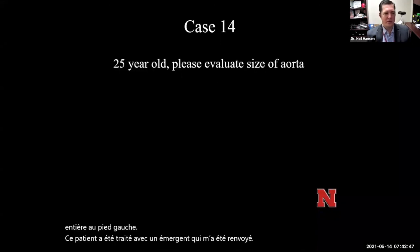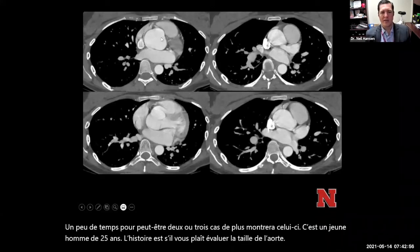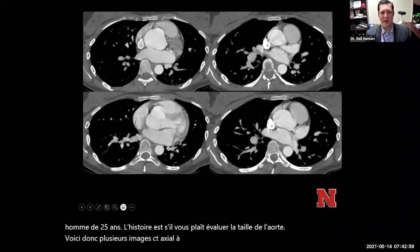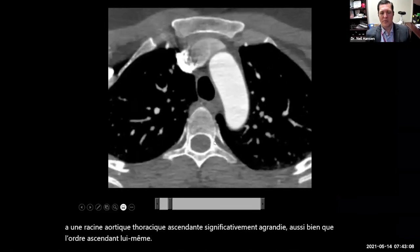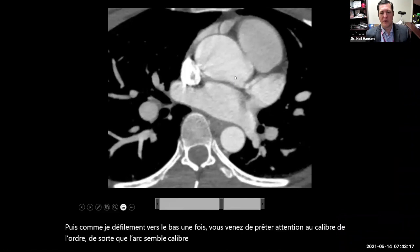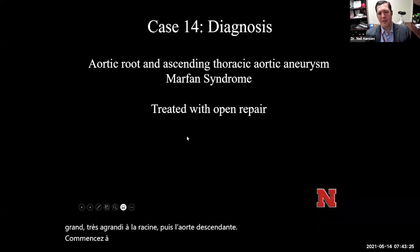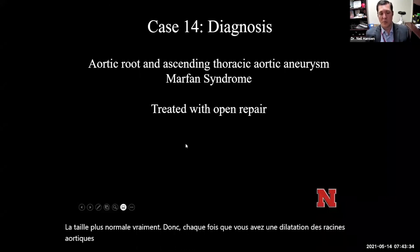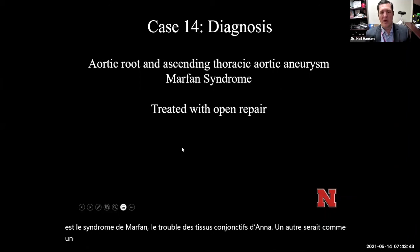The next case is a 25-year-old with the history: please evaluate the size of the aorta. On axial CT images through the aortic root, there's a significantly enlarged ascending thoracic aortic root, as well as the ascending aorta itself. The arch looks relatively normal caliber, the ascending aorta is quite large and very enlarged at the root, and then the descending aorta returns to more normal size. Anytime you have aortic root dilation and ascending thoracic dilation, you have to think about Marfan syndrome or other connective tissue disorders, as well as a bicuspid aortic valve or severe aortic valve stenosis. In this case it was Marfan syndrome, treated with an open repair.